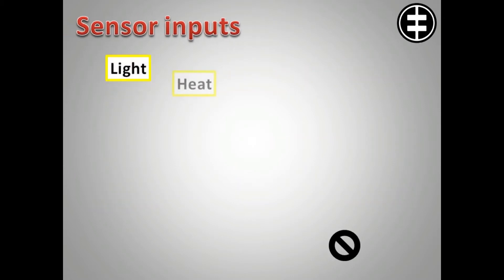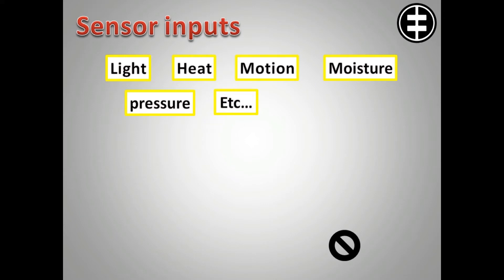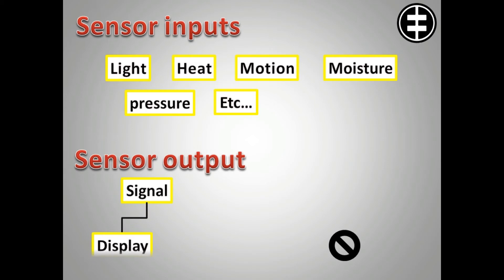The specific input could be light, heat, motion, moisture, pressure, or any one of a great number of other environmental phenomena. The output is generally a signal that is converted to human-readable display at the sensor location or transmitted electronically over a network for reading or further processing.